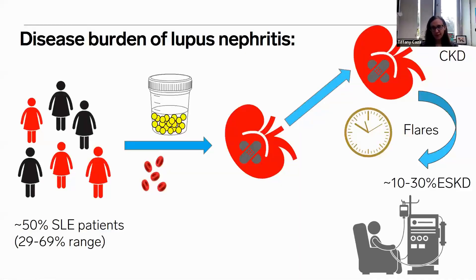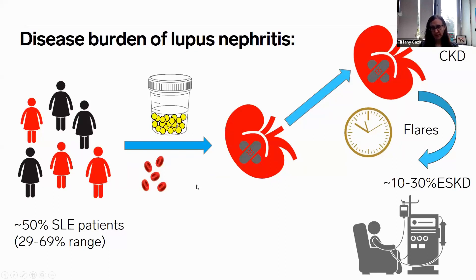Lupus nephritis overall has a very high disease burden in patients with systemic lupus erythematosus. It affects about 50% of lupus patients, disproportionately affecting those of minority populations, including Hispanic and Black individuals. It typically presents as hematuria and proteinuria on urinalysis, or may present with acute kidney injury, frequently with concurrent nephritic or nephrotic syndrome.